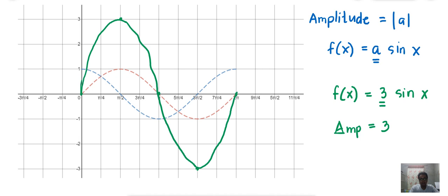So, the amplitude changes the height of the function. So, this is f(x) equals 3 sine x.